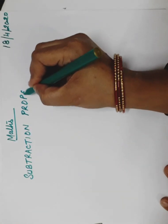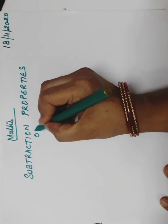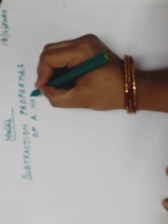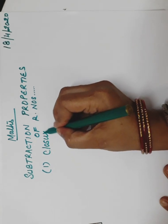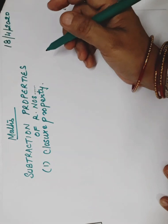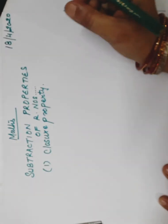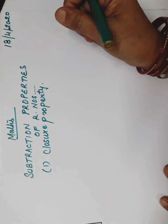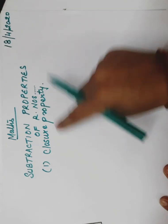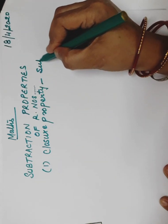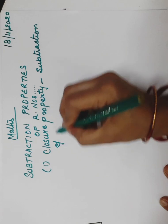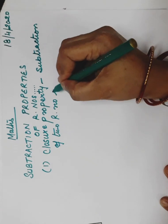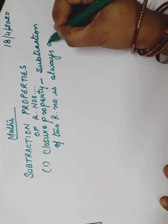Subtraction properties of rational numbers. The first one was the closure property. What does the closure property of addition say? It says the sum of two rational numbers is a rational number. But in subtraction, the closure property says the subtraction of two rational numbers is always a rational number.